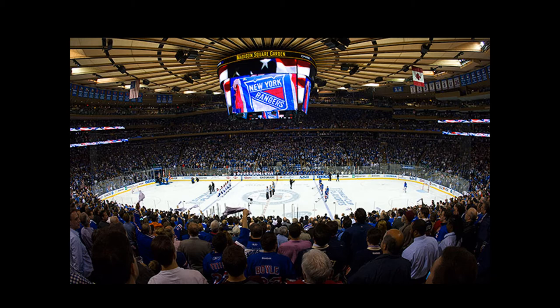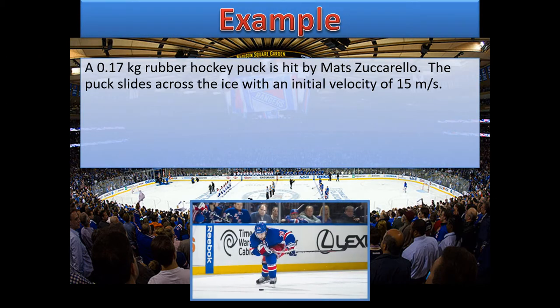Let's start with a problem from Madison Square Garden, home of the New York Rangers — and formerly home to Mats Zuccarello, who now plays for the Minnesota Wild. A 0.17 kilogram rubber hockey puck is hit by Mats Zuccarello, and the puck slides across the ice with an initial velocity of 15 meters per second. After he hits it, it's only the frictional force between the ice and the hockey puck that slows it down.